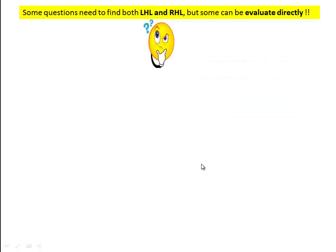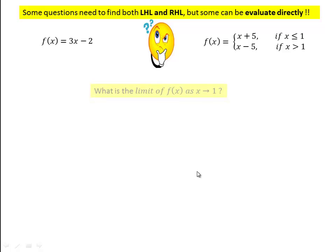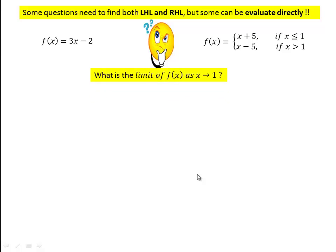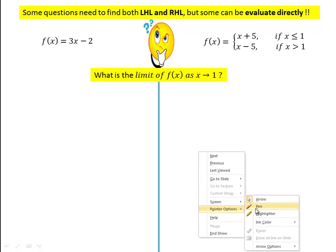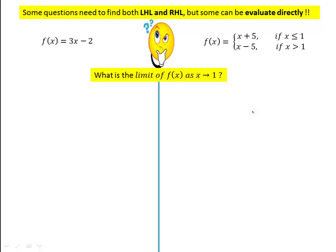Some questions need both left-hand and right-hand limits, but some can be evaluated directly. The question is: how do we distinguish? I have given two functions, one on the left and one on the right. The question is: what is the limit of f(x) as x approaches 1? Approaching towards 1 means we have two cases: slightly greater than 1 and slightly less than 1. For the function on the left, when x is slightly less than 1 or slightly greater than 1, we take the same function 3x − 2.